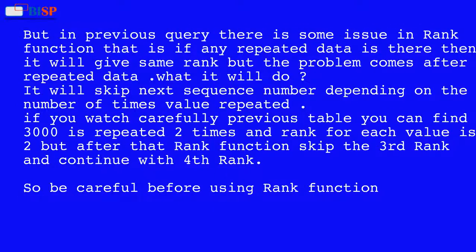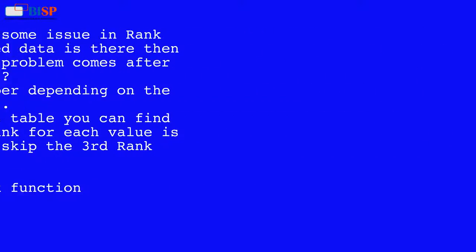However, there is an issue with the RANK function: if any repeated data exists, it will give the same rank, but after the repeated data it will skip the next sequence number depending on how many times the value was repeated. For example, if 3000 appears twice and both get rank 2, the RANK function skips rank 3 and continues with rank 4. So be careful before using the RANK function.